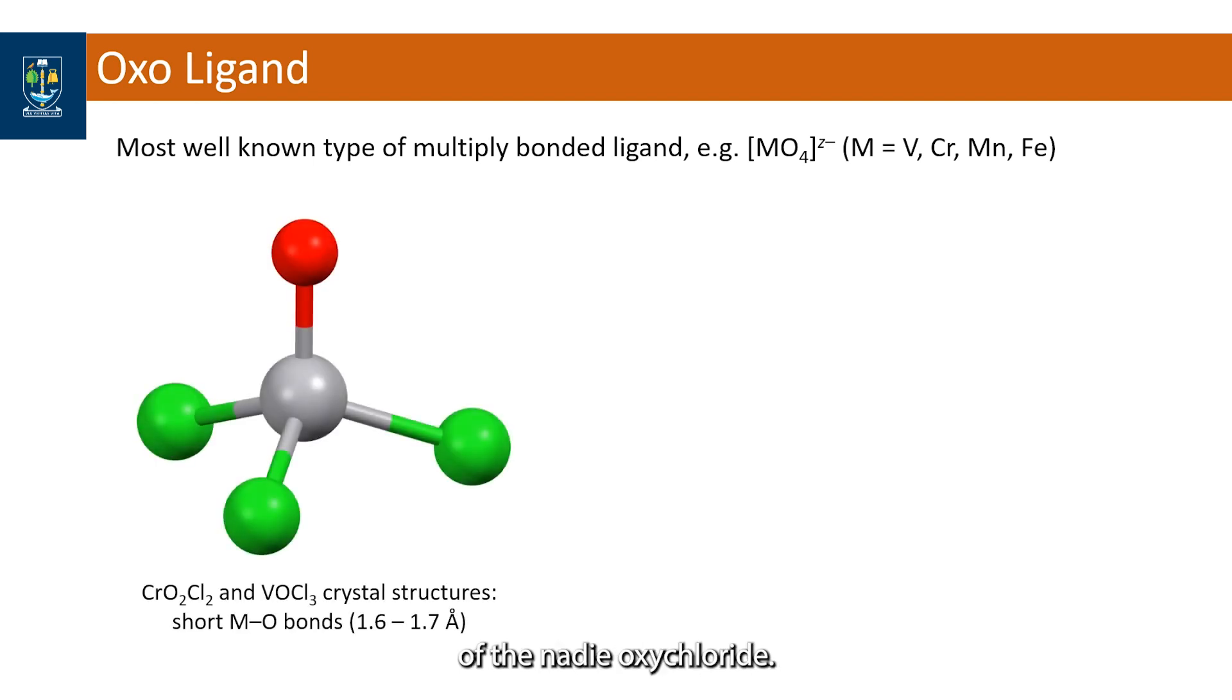Here is the structure of vanadium oxy chloride, a four coordinate complex with a vanadium oxo bond that is notably shorter than a typical metal oxygen bond of about two angstrom.